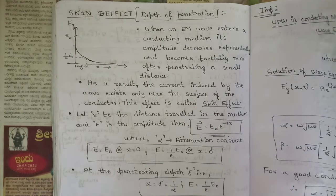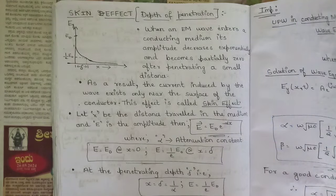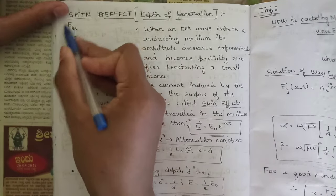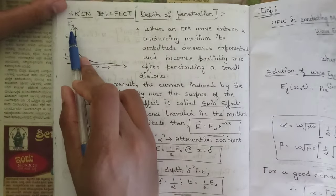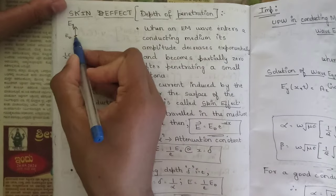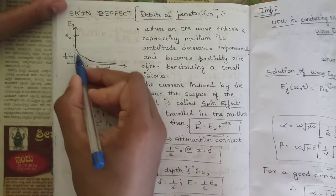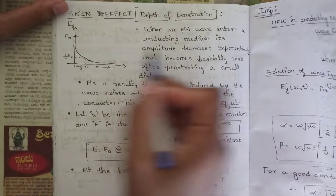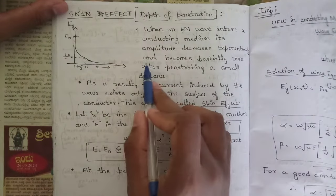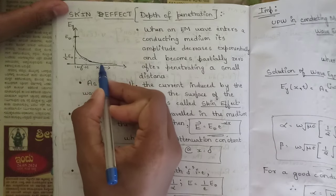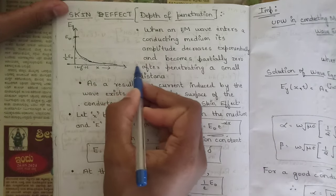Let's analyze this figure. The electric field direction is assumed in the y direction, that is Ey. The electric field is moving in a particular curve, and the EM wave enters the conducting medium. Its amplitude decreases exponentially and becomes partially zero — you can see that it decreases exponentially and reaches the point where it partially becomes zero.